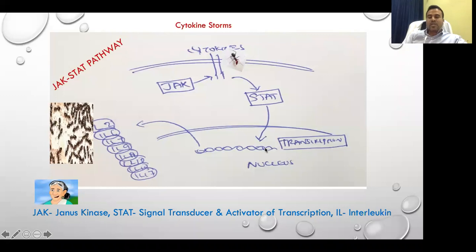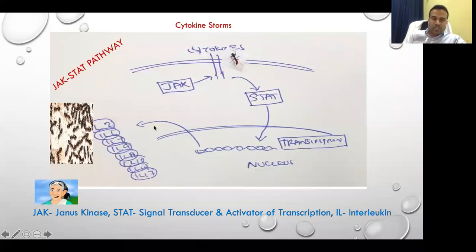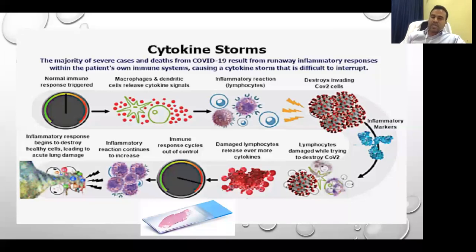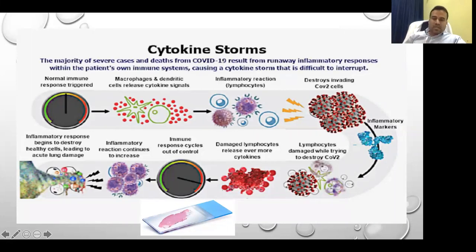The STAT proteins move to the nucleus, reach it, and attach to the codons or the template of the messenger RNA. During transcription, they start producing more interleukins — like interleukin 2, 6, and 7. This leads to a cascade of reactions and ultimately to a cytokine storm. Too many lymphocytes are damaged by the virus, which again causes a host inflammatory reaction leading to the cytokine storm.